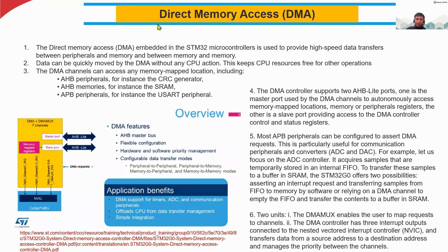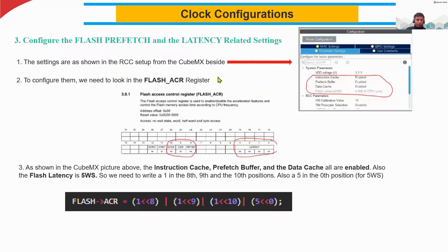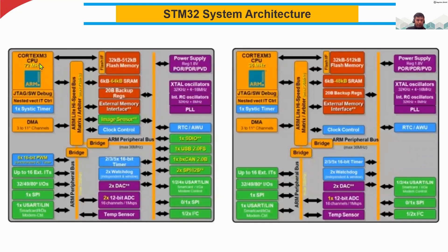From the name itself we can understand the function of this module — Direct Memory Access. We are going to access the memory directly without the help of the CPU. In the system architecture we have memories, and we have so many peripherals. We need to always transfer data between peripherals and memories or between memories. Each time we transfer data this way, if we use the CPU resource, we are using it unnecessarily.